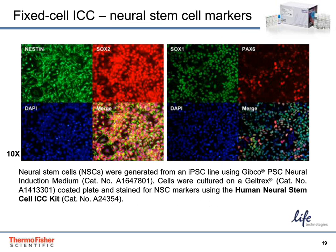This slide shows the presence of neural stem cell markers using the NSC-specific fixed cell ICC kit. Neural stem cells or NSCs were generated from an iPSC line using GIBCO PSC neural induction medium. Cells were cultured on Geltrex-coated plates and stained for NSC markers. The left set of panels shows that NSCs are positive for Nestin and SOX2 along with DAPI and the merged image. The right set of panels shows that NSCs are positive for SOX1 and PAX6 along with DAPI and the merged image.